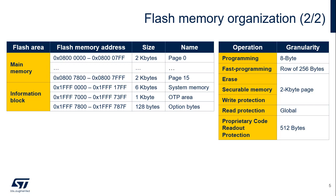The first table details the memory organization based on a main flash memory area and an information block. The second table details the granularity of flash memory operations. Programming is done on 8-byte double words. Fast programming is done on a row of 256 bytes. Erase is done either globally or on 2 kilobyte pages. The securable memory is aligned on pages. Write protection is done per page. Read protection is global, and proprietary code readout protection is done on 512-byte areas.